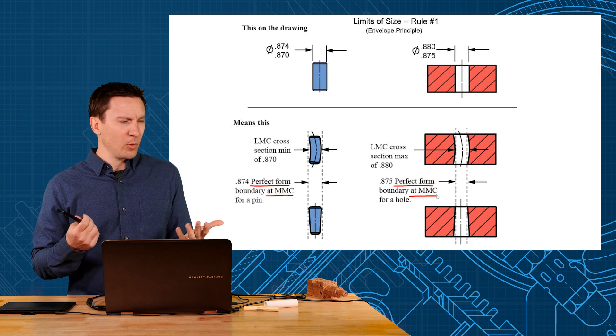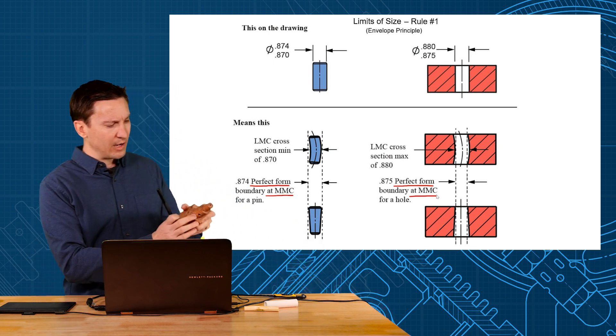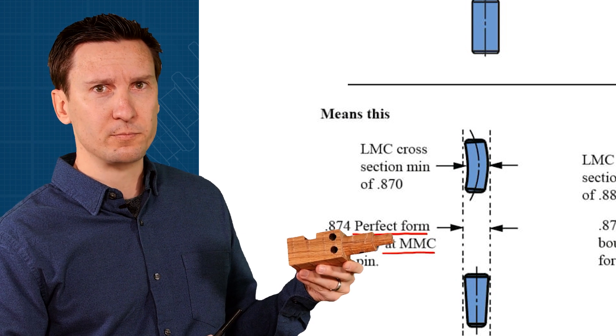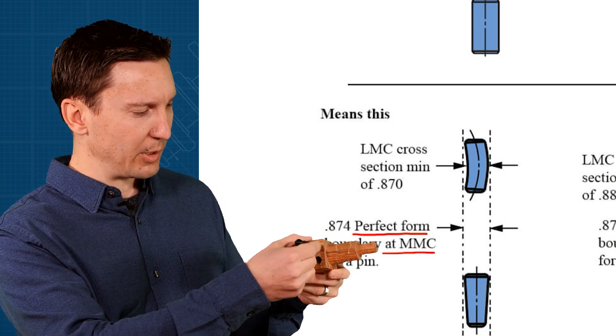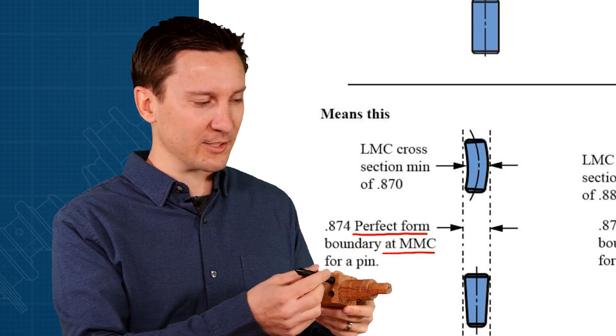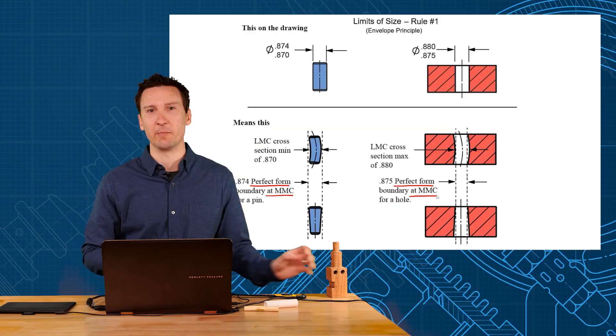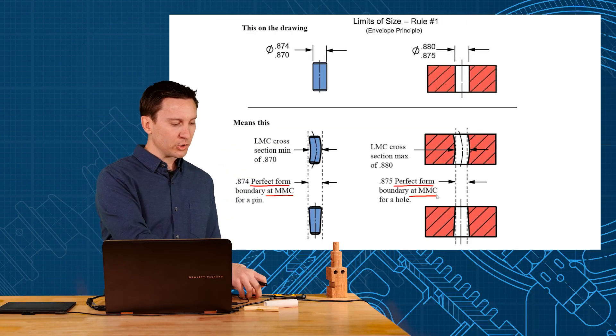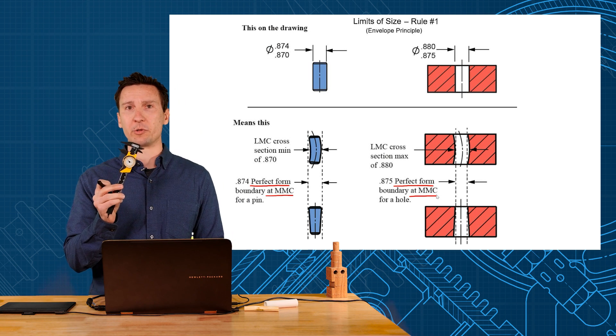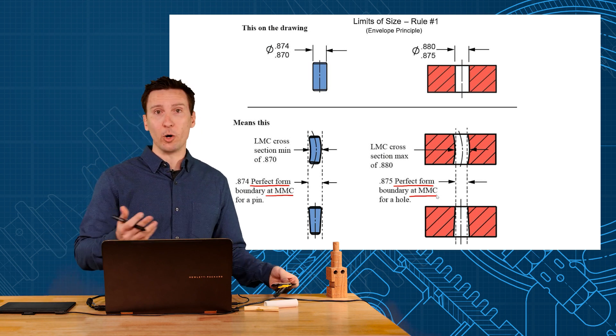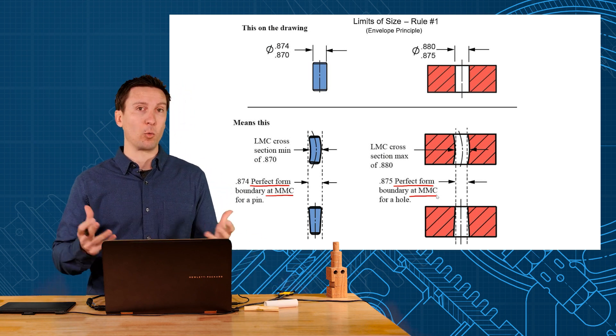So that's the rule we basically made: that pin better go into that hole. I don't want to make it so complicated because it's really not. How do you check the size of a hole? Stick a pin in there. That's basically what Rule Number One is - use a go gauge, use a gauge pin to measure the size. So size is more than just calipers across there. It will be a go-no-go gauge because of this perfect form boundary at MMC.